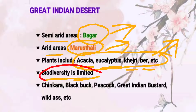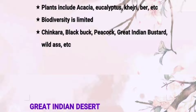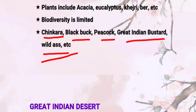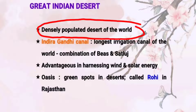In the desert, biodiversity is very limited. The animals found in the Great Indian Desert include chinkara, blackbuck, peacock, the Great Indian Bustard, and the wild ass. These are the animals you will find in the Thar Desert.